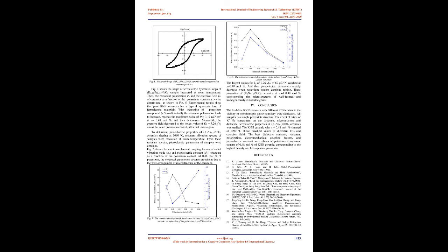The varying tendency of dielectric loss tangent with the potassium contents is inverse to that of the measured dielectric constant. The minimum value of dielectric loss obtained at X equals 0.48 mol percent potassium is 0.07. Fig.3 shows room temperature dielectric constant ε and dielectric loss tanδ of KNN ceramics as a function of the potassium content.